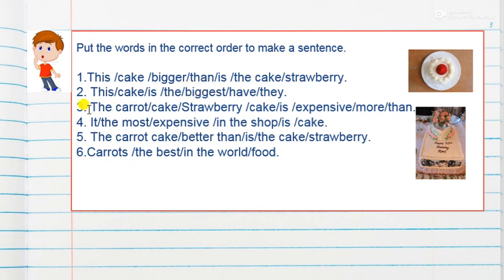Number three, two things, carrot cake and strawberry cake. So this one is comparative. Number four is "most," you can see, so this one is superlative degree. Number five is two things, carrot cake and strawberry cake, and adjective of comparative degree, "better than."